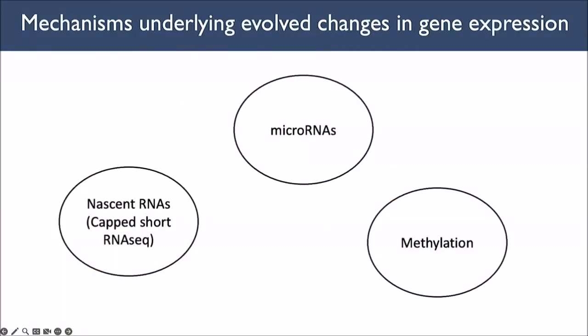What we're currently working on is understanding the mechanisms underlying those changes in gene expression. We're taking three different approaches: looking at nascent transcription through cap short RNA sequencing, looking at microRNAs, and looking at methylation. We're trying to disentangle the roles of these different regulatory mechanisms and whether looking at nascent RNAs — RNAs being actively transcribed — can help identify potential enhancer and promoter regions leading to these expression differences between populations.